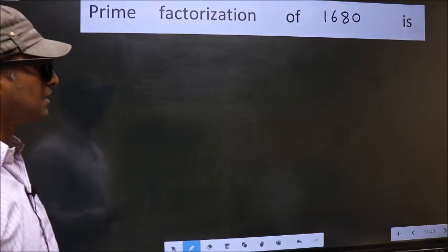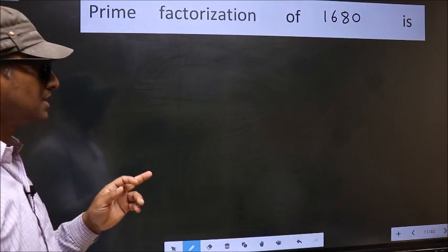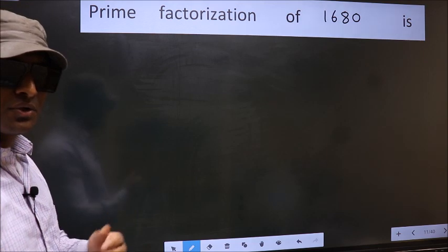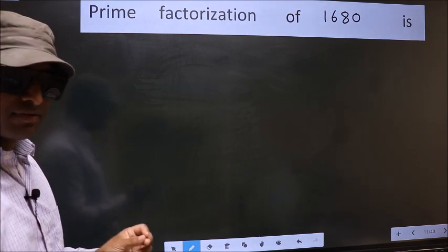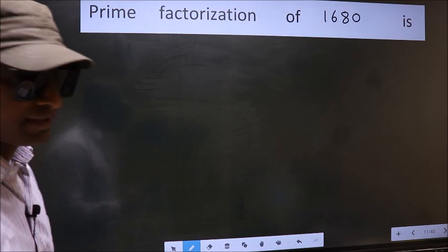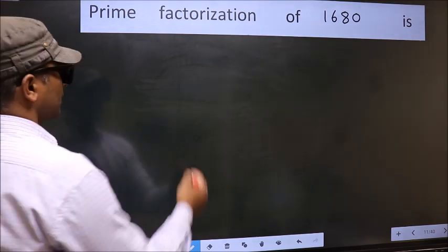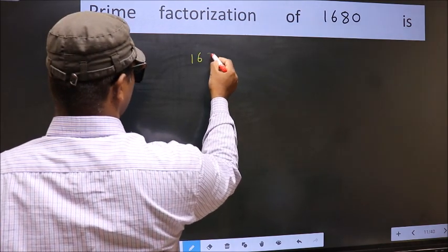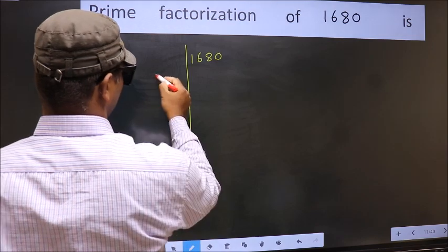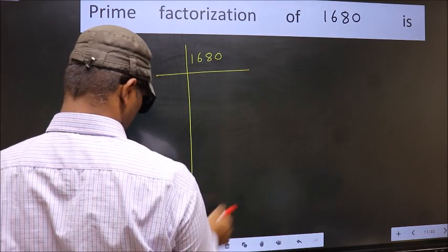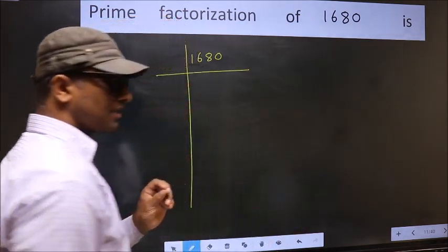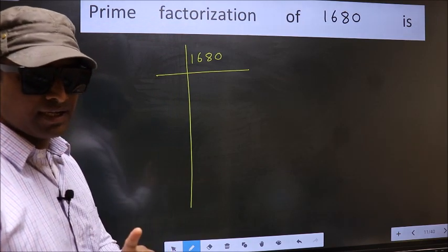Prime factorization of 1680. To do prime factorization, first we should frame it in this way: 1680. This is your step 1.